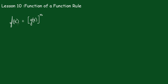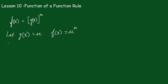Here I've got a function f(x) equal to another function raised to the power n. I'm going to let g(x) equal to u, which means that f(x) is equal to u to the power n. Now f(x) is really like y, so it's y equals u to the n.